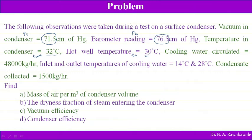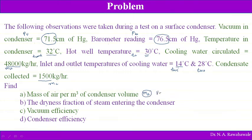Cold water is circulated into the condenser. The mass flow rate of cold water MW is 48,000 kg per hour. Inlet and outlet temperatures of cooling water: cooling water enters at 14 degrees Celsius and exits at 28 degrees Celsius — TWI is 14°C and TWO is 28°C. Mass of condensate collected is 1500 kg per hour.